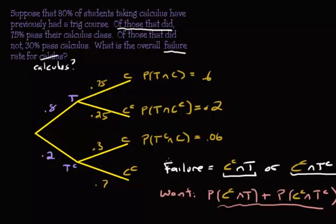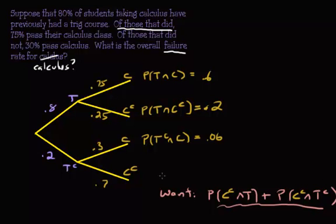And so I will have to erase this down here. Alright, so this is the probability of not taking trig and not passing, which is also part of the failure rate. So we're going to include that as well. So that's 0.14.